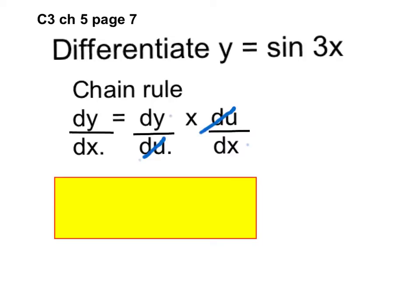The first thing I'm going to do is to define what u is. u is the bit that's within the function. So I'm going to say let u equals 3x because that's inside of sine.